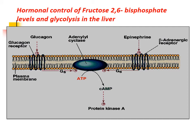Hormonal control of fructose-2,6-bisphosphate levels and glycolysis in the liver: Glucagon binds to the glucagon receptor and epinephrine binds to the beta-adrenergic receptor. Binding of these hormones activates adenylate cyclase via G protein, which converts ATP to cyclic AMP. Cyclic AMP activates protein kinase A, which phosphorylates the bifunctional enzyme PFK2. By phosphorylation, kinase activity is inhibited and phosphatase activity is activated. The active phosphatase acts on fructose-2,6-bisphosphate, decreasing its level and inhibiting glycolysis.